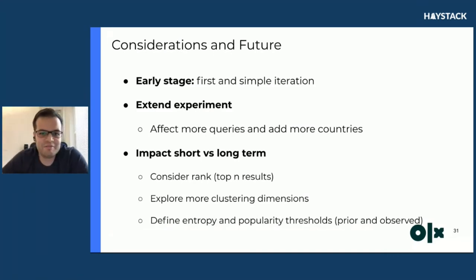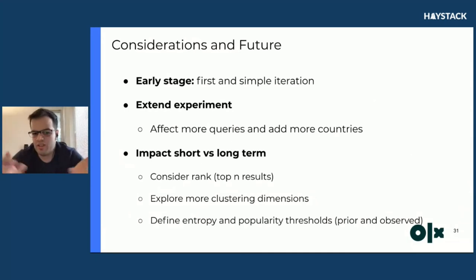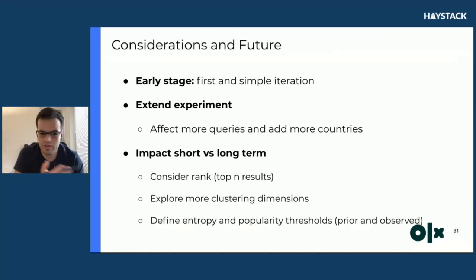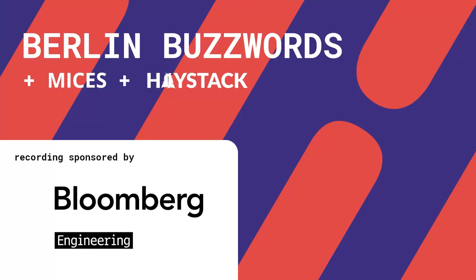To finish: this is an early-stage experiment. For the next iteration, I want to extend this to more countries and more queries, and study the impact in the short and long term. I can consider ranking not the entire result set but just the top-N results, explore more cluster dimensions, and define better entropy and popularity thresholds. I hard-coded the current thresholds as a prior estimate, but over time as I get more observations I can refine them and have the autocomplete self-diversify. That's it — thanks!